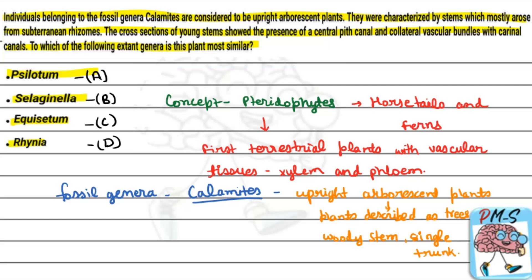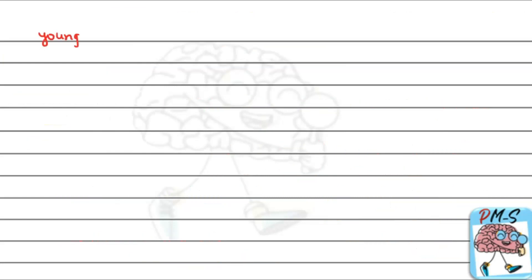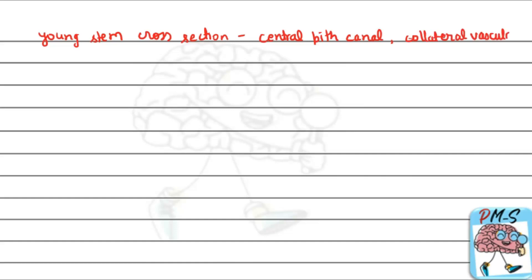These upright arborescent plants had subterranean rhizomes — these are underground stems which form roots and stems respectively, present in the subterranean region. The young stem cross-section showed a central pit canal and collateral vascular bundles with carinal canals.